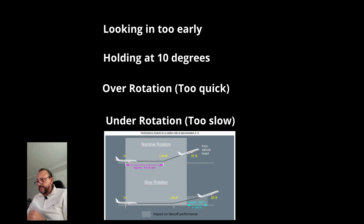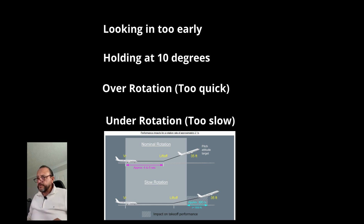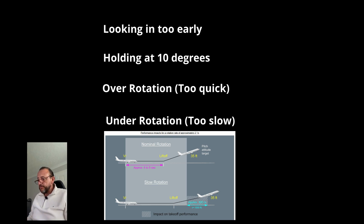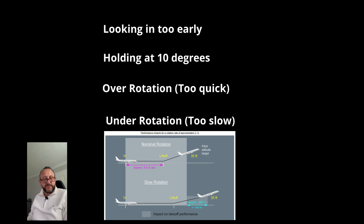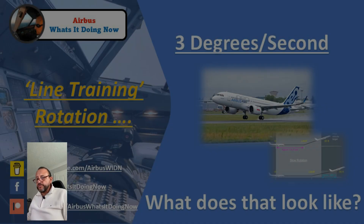Under-rotation — a slower rate — is a performance risk in the first and second climb segment. There was an article written by Airbus: a 340 suffered a single engine failure, and the rotation was so slow they were only a matter of feet away from the upwind runway lighting. Had conditions been slightly less favourable, there would be question marks over whether they'd have made it. So under-rotation is just as important a focus as over-rotation.